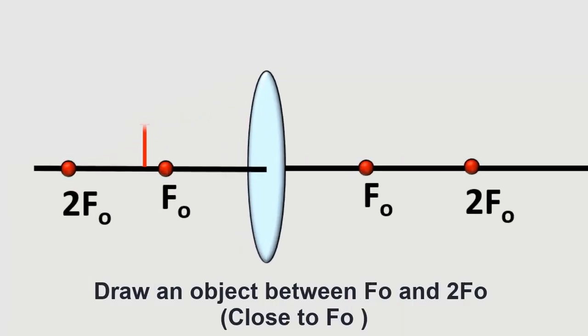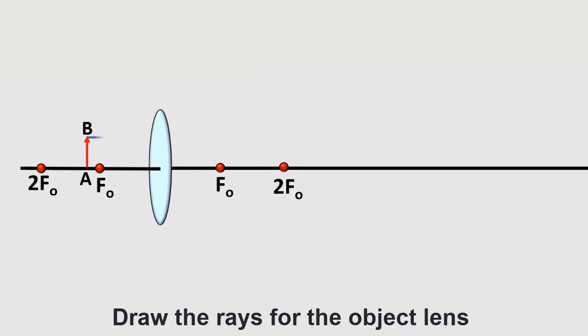Draw an object between F0 and 2F0. Keep the object close to F0. Draw the rays for the objective lens.